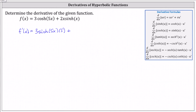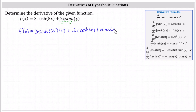If it's helpful, we can label two x as u, and we can label hyperbolic sine x as v. The derivative of two x hyperbolic sine x equals the first function, two x, times the derivative of the second function — the derivative of hyperbolic sine x is hyperbolic cosine x — and then plus the second function, hyperbolic sine x, times the derivative of the first function. The derivative of two x is equal to two.